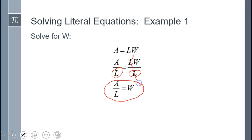So now, if I have area, let's say the area was 12 and the length was 6, I would simply do 12 divided by 6 equals W. I don't have to rearrange the equation to get that 2. So that is how we would use that.